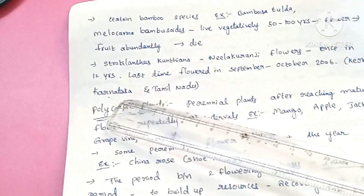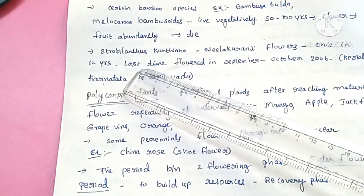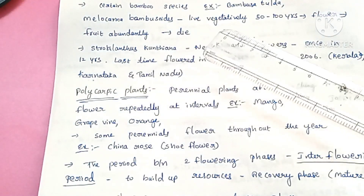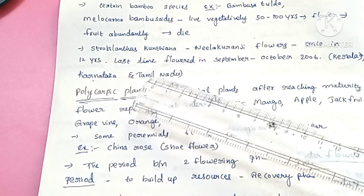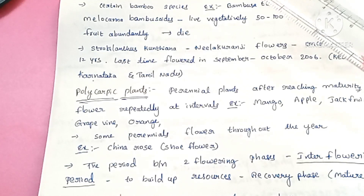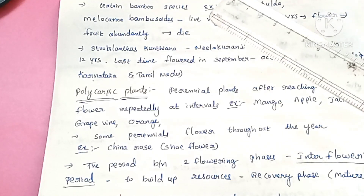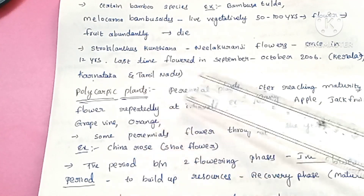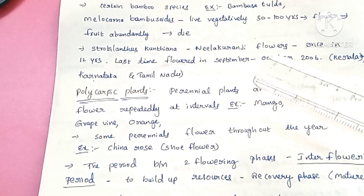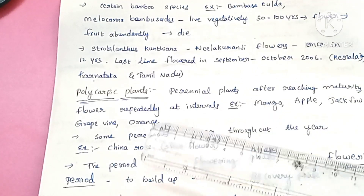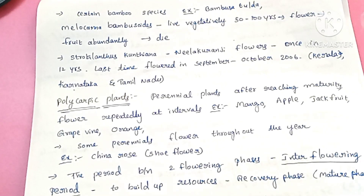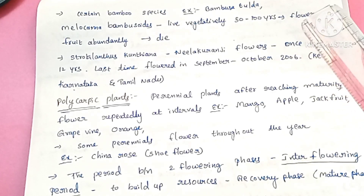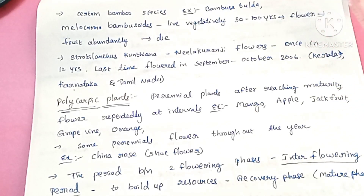An important example is Strobilanthus, which flowers once in 12 years. This plant grows in Kerala, Karnataka, Tamil Nadu — the hilly regions. According to our textbook, it flowered in September to October 2006, and then again in 2018. When this mass flowering occurs, the hilly regions are covered in blue-colored stretches, which is a tourist attraction.